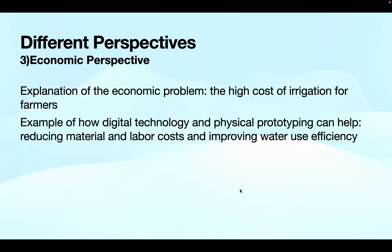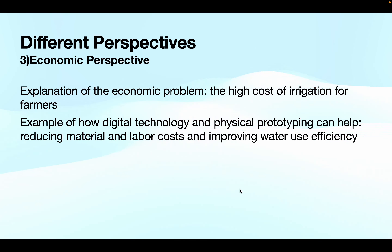From an economic perspective, the high cost of irrigation is an economic problem for farmers. Digital technology and physical prototyping can help reduce material and labor costs while improving water use efficiency, making irrigation more accessible and cost effective.